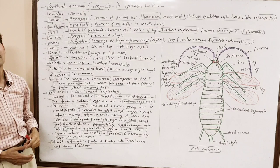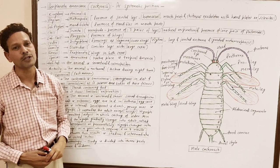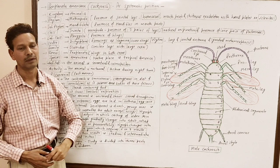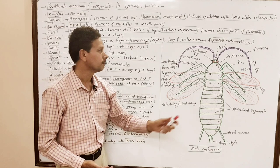Sub-phylum Mandibulata — mandibles are present in the mouth parts. Class Insecta: a very characteristic feature — note down for all competition students — class Insecta animals are hexapoda, meaning three pairs of legs are present. The body of cockroach is divided into three segments: head, thorax, and abdomen.